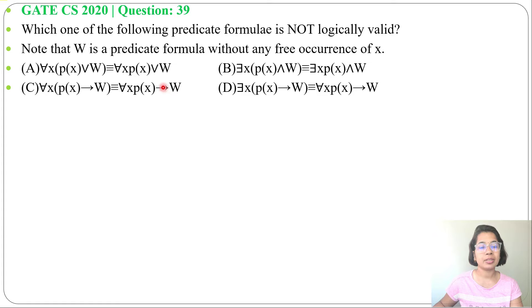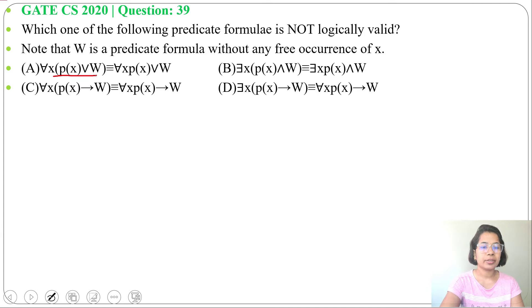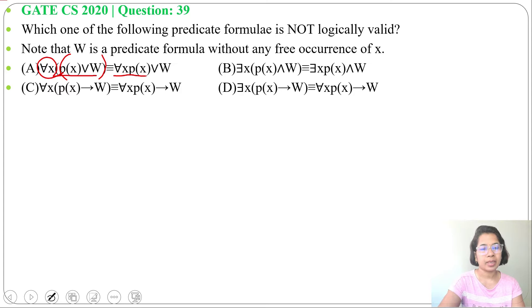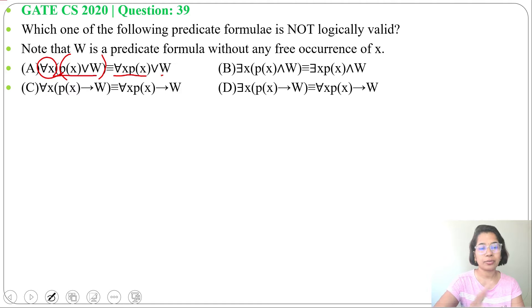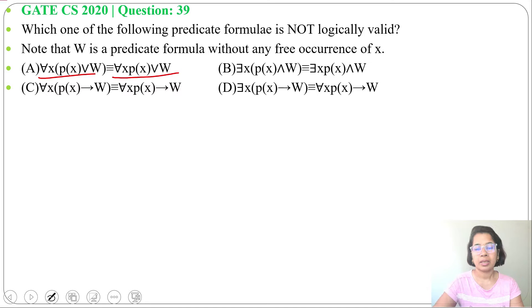Let's check one by one which one is not logically valid. Option A: for all X (P or W) is logically equivalent to (for all X P) or W. Here the universal quantifier is applied for both P and W on the left, but on the right it is just for P. It's logically valid because W is not bounded — it's free. Only P is bounded, so we can write them separately. Both are logically equivalent.